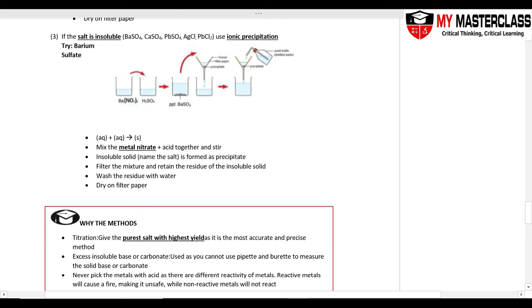Last but not least, if the salt is insoluble salt, under the syllabus we have these five salts: barium, calcium, lead sulfate, silver, lead chloride. Use ionic precipitation. Pick the nitrate. It must be aqueous plus aqueous gives you a solid. Pick the nitrate in two test tubes, transfer one to the other, you will form a precipitate.